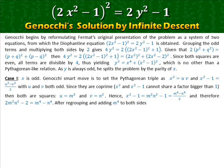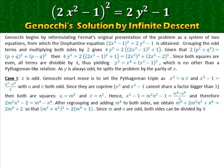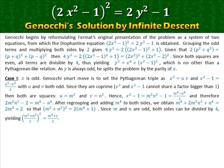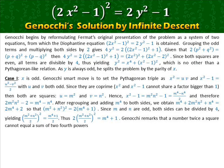After regrouping and adding m⁴ to both sides, we obtain (m² + n²)² = 2m⁴ + 1. Since m and n are odd, both sides can be divided by four, yielding ((m² + n²)/2)² = (m⁴ + 1)/2, and thus 2·((m² + n²)/2)² = m⁴ + 1. Genocchi remarks that a number twice a square cannot equal a sum of two fourth powers, already proven by Frenicle and Euler.